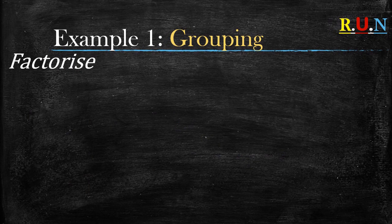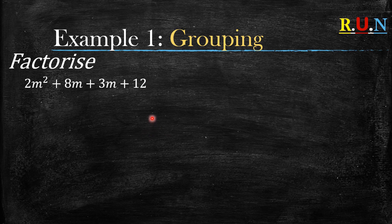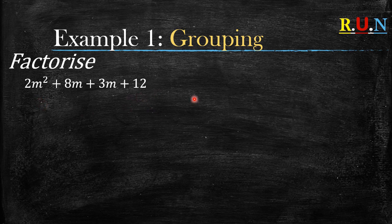Example number one: what do you do when you are given something like this to factorize? First of all, when you factorize by grouping you need at least four terms for it to be factorized by grouping.